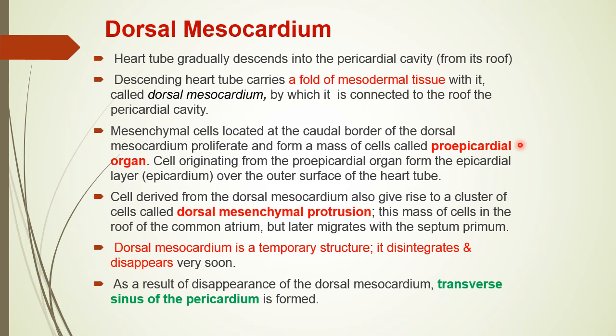Tissues for the coronary arteries are derived from the proepicardial organ, and similarly the epicardium is derived from the proepicardial organ. There is another mass of mesodermal cells which forms a cluster called the dorsal mesenchymal protrusion (DMP). This mass derived from the dorsal mesocardium comes to lie in the roof of the common atrium, and later it migrates with the septum transversum, which we will discuss again.